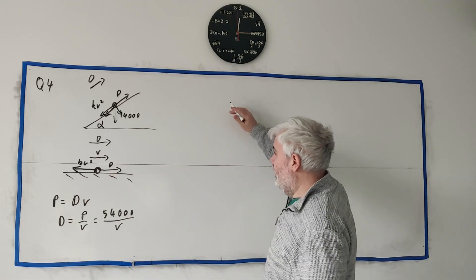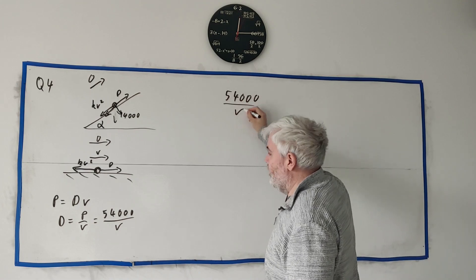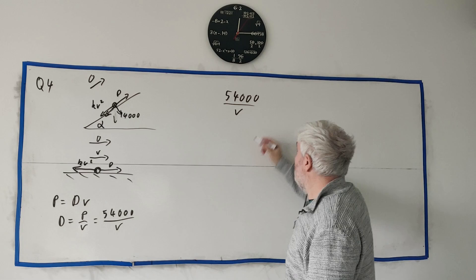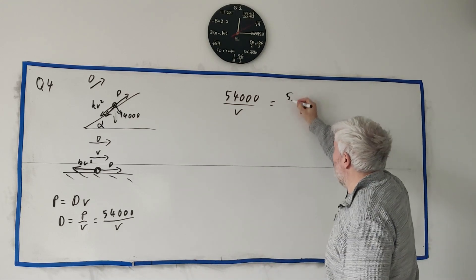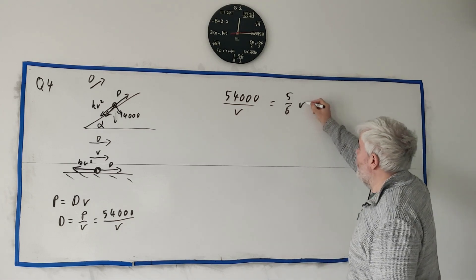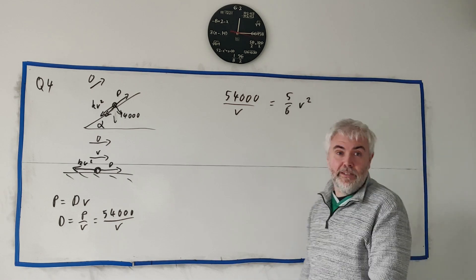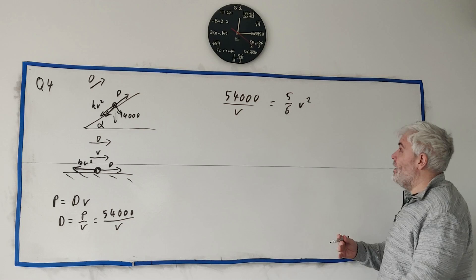So the ones going to the right are 54,000 divided by V. They must equal the ones going to the left. Sorry, I wrote K in. We know what K is. That's 5 over 6. Found that out in part 1. V squared. That's it. That's what we know from this situation. There's only one unknown here. It's just V. Rearrange this. Get all the V's on the same side. V cubed.